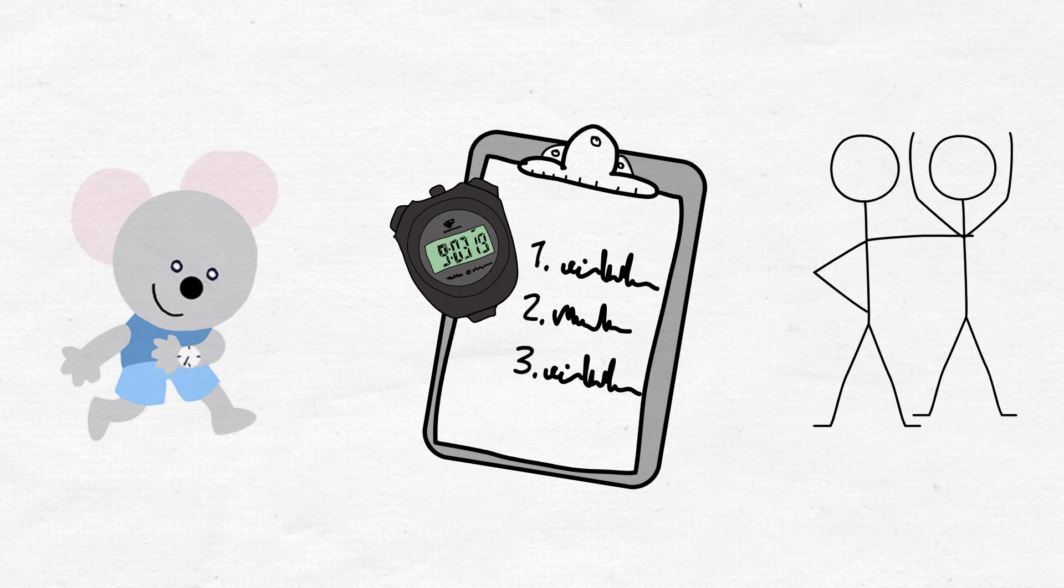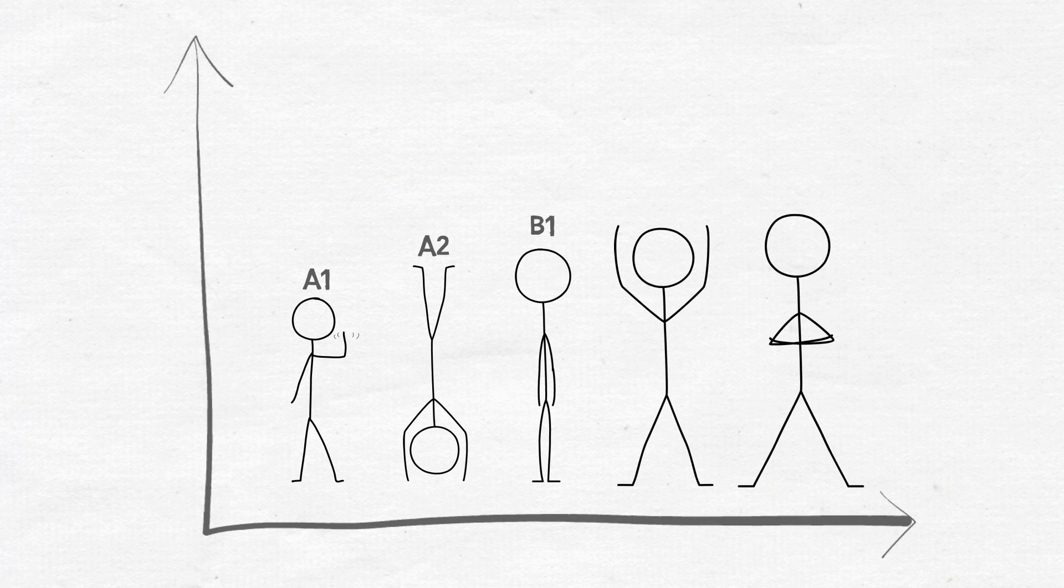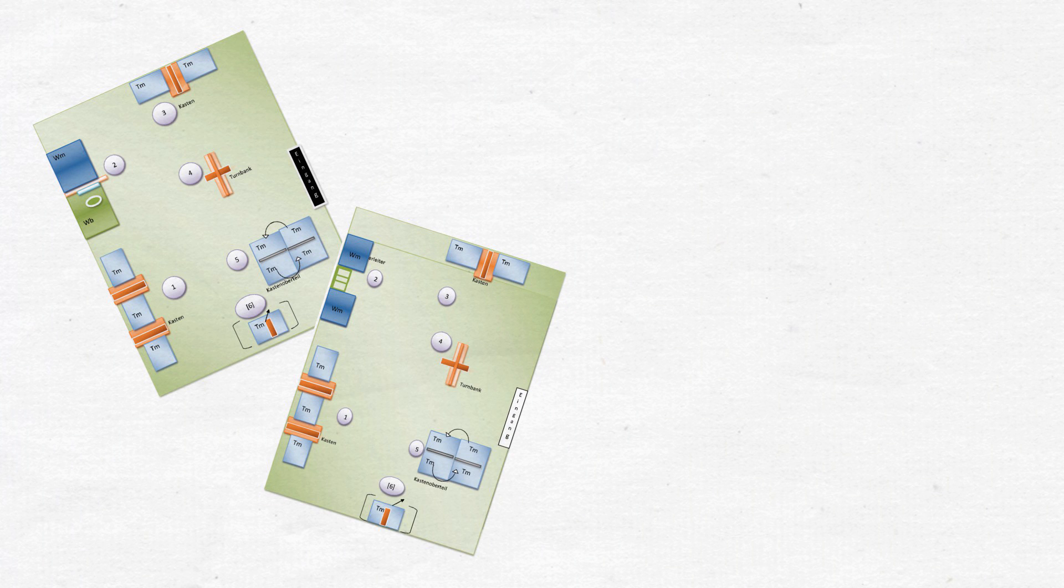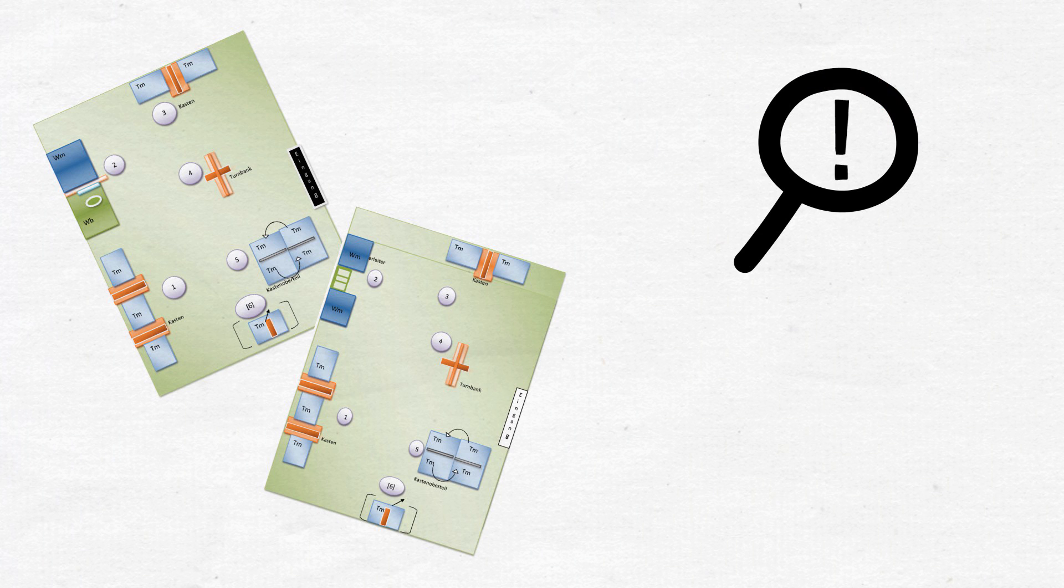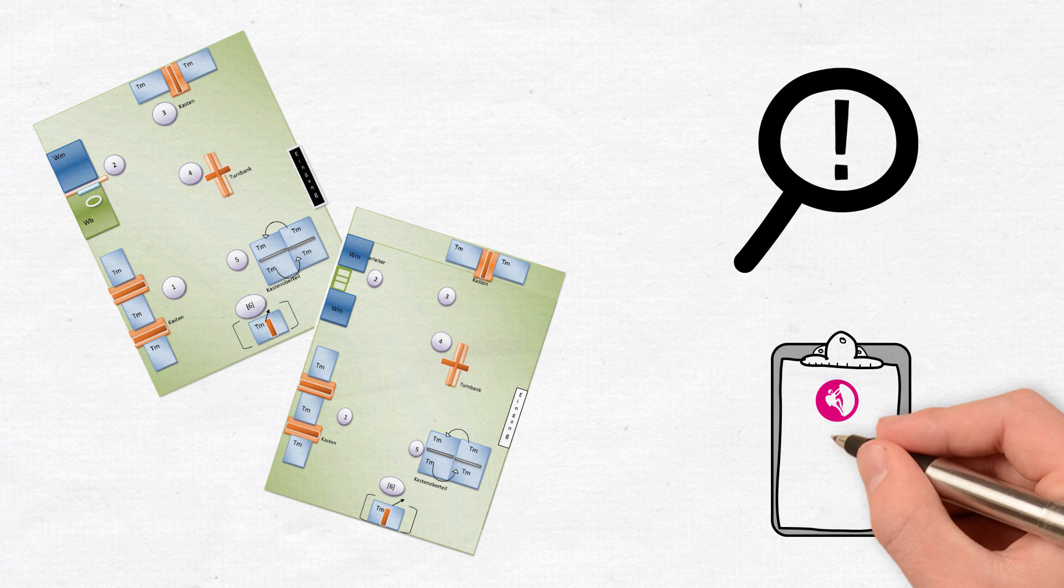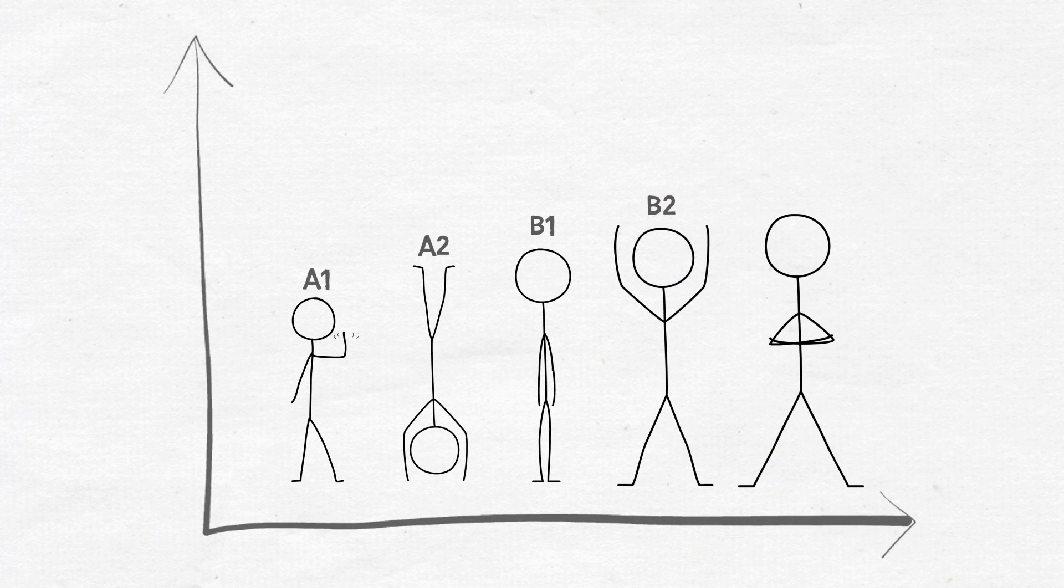Students at the upper secondary level are asked to complete a parkour with different sports equipment. This helps them to assess risk, to consciously expand personal limits, and to evaluate their own performance.